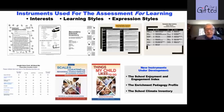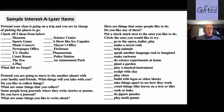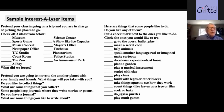Let's look at a few examples of these questions. This is just from our interest analyzer. 'Pretend your class is going on a field trip and you are in charge of picking the places to go. Check off three items from below.' Museum, sports game, music concert, firehouse, mayor's office, TV studio — and it goes on like that. We have a primary edition of this, and we've also developed a separate interest analyzer just asking children what kind of books they like to read — and then instead of always using the primer, we let them make some choices.